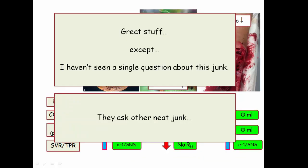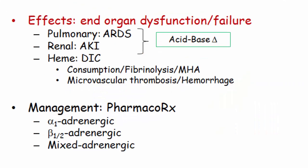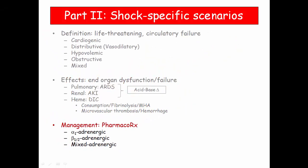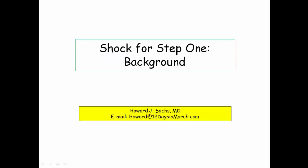This is great stuff, except for one little problem — I've never seen a single question on any of this stuff. All the questions seem to focus on derivative topics. As we saw earlier, shock is a gateway condition that leads to discussion of target organ failure, and more specifically, these are the scenarios in which pharmacotherapy is introduced. We will stop here, and in part two of the shock modules we will review the specific shock scenarios and the key pharmacologic agents you're expected to be familiar with on the Step 1 exam. If you have any questions or concerns, feel free to email me at 12 Days in March. Thank you.